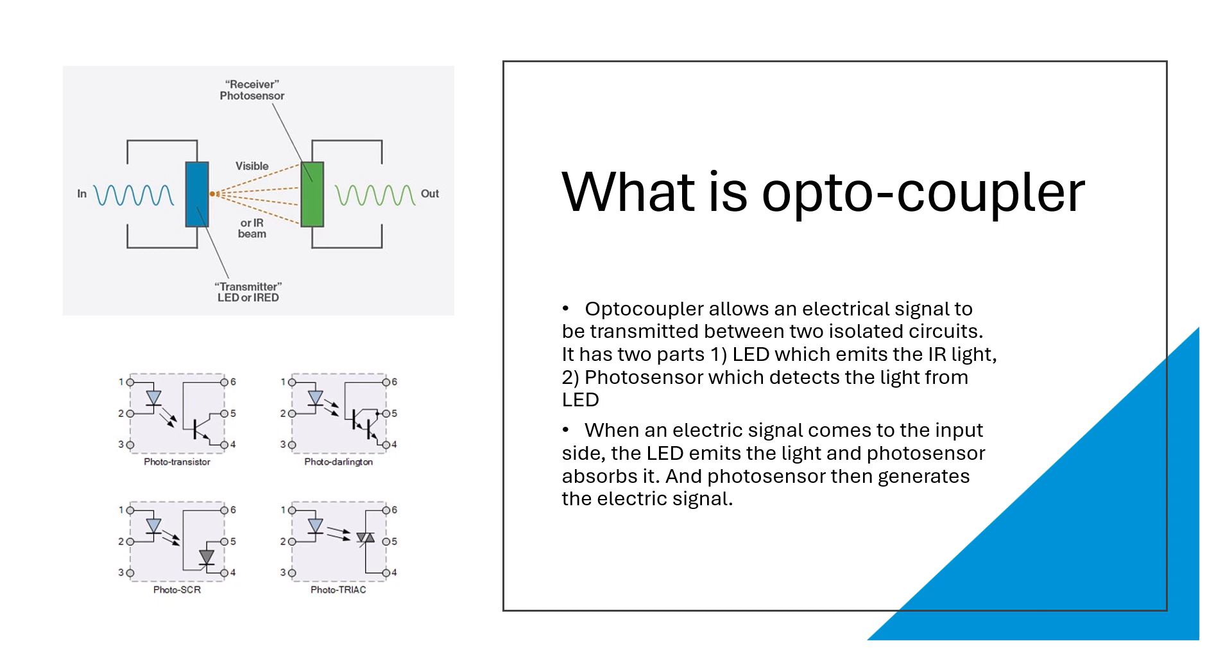And another one is the photosensor which detects that infrared light and generates the electric signal. And this whole setup is contained inside a black box so that any environment noise does not affect the setup.